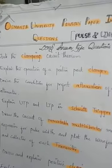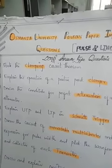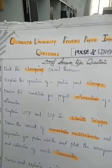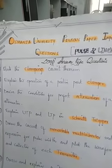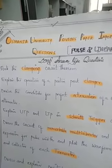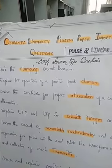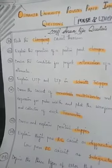The first question is: state the clamping circuit theorem. You need to explain the clamping circuit theorem. As we already discussed, it has a forward gain Af, where Af equals Rf by R. You need to write that, and if they ask you to prove it, you can go with the proving part as well.